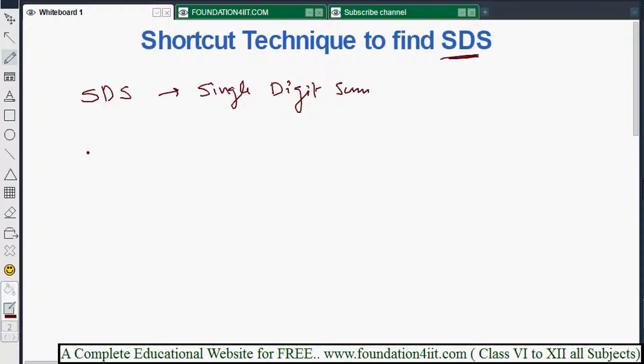For example, you need to find the SDS, or Single Digit Sum, of 4352. Generally what we'll do is add all the digits: 4 plus 3 plus 5 plus 2.